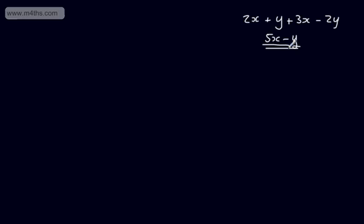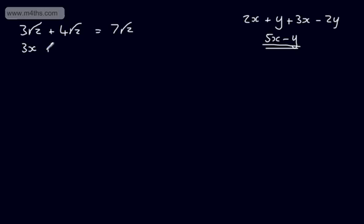We do exactly the same with surds. With surds, we can express certain surds in simplified form, so when it looks like we can't add or subtract, we can once we break them down. Let's say I've got 3 root 2 plus 4 root 2. We've got like surds — root 2 and root 2 — so I'm adding 3 lots of a quantity to 4 lots of a quantity. We're going to get 7 lots of that quantity, so it's going to be 7 root 2. Students often write 7 root 4 for some reason — it's just 7 lots of root 2. Like the algebraic expression 3x plus 4x equals 7x.